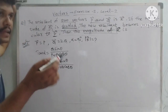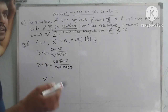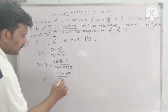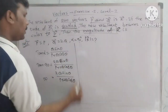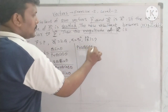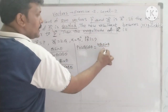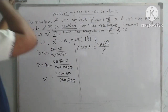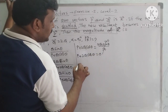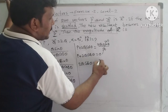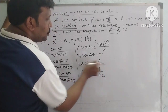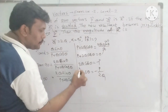Tan 90 is equal to infinity, because sin 90 divided by cos 90 gives 1 divided by 0, which is infinity. So then: 2Q sin theta divided by P plus 2Q cos theta equals infinity. Something divided by infinity is always 0. So finally, P plus 2Q cos theta equals 0. Therefore 2Q cos theta equals minus P, and cos theta equals minus P divided by 2Q.